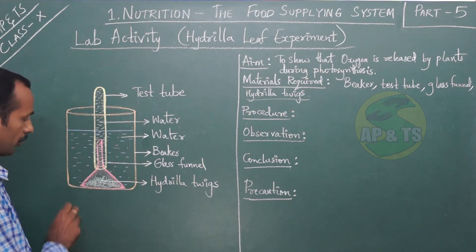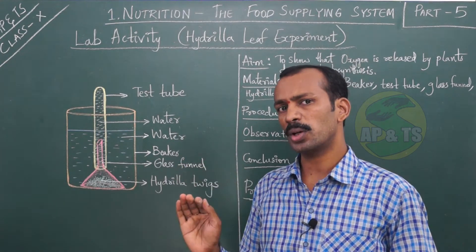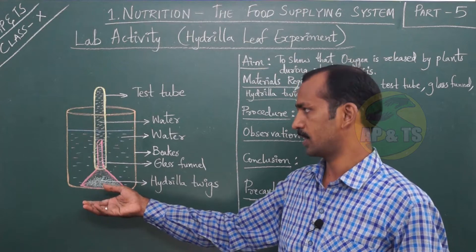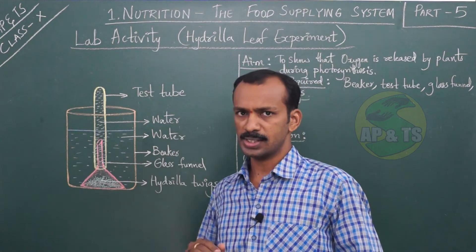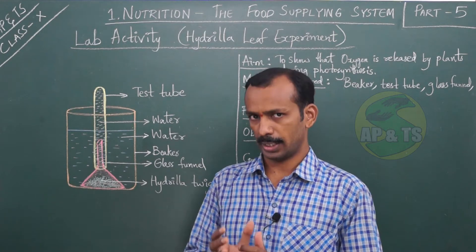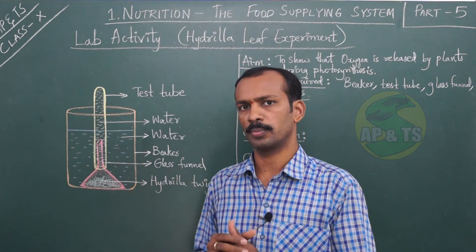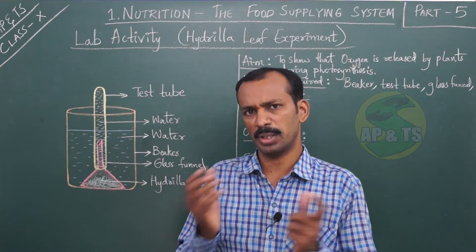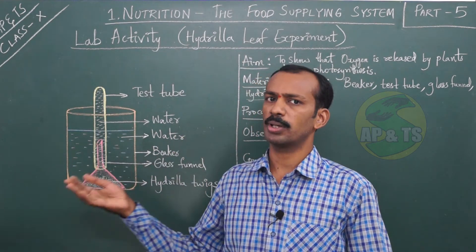Now make one more copy of this apparatus. Take one more beaker, glass funnel, hydrilla plants, and test tube. Call them Apparatus A and Apparatus B. Place Apparatus A in sunlight and Apparatus B in a dark room — or vice versa. One apparatus is placed in the dark and the other is placed in sunlight.